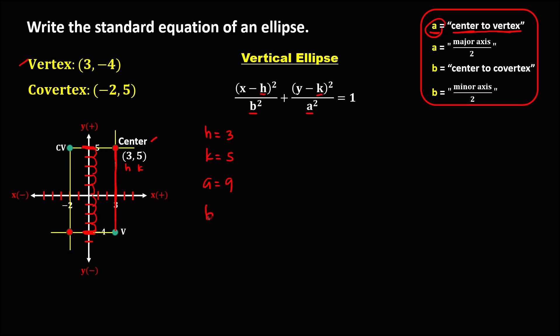To solve for b, we use the distance from the center to the co-vertex. Using the counting method, counting from the center to the co-vertex, we get 1, 2, 3, 4, 5. Therefore, b is equal to 5.